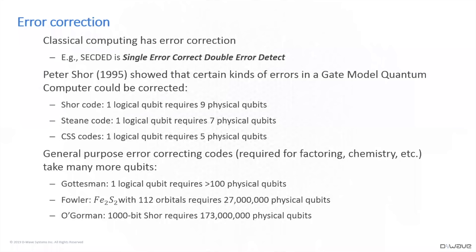Two analyses of particular quantum algorithms tell a similar story. Fowler looked at an atomic and molecular calculation for iron sulfide at 112 orbitals, which may have required 27 million physical qubits. O'Gorman analyzed Shor's algorithm for factoring on a 1,000-bit number and said that would require on the order of 173 million physical qubits. These are important numbers to keep in mind when looking at where we are today with gate model quantum computers.